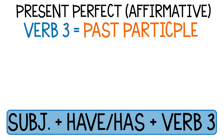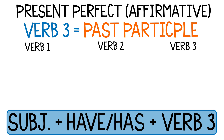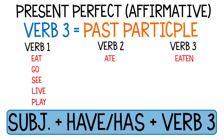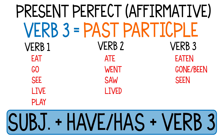Let's look at some verbs and go through verb one, two, and three. We'll use the verbs eat, go, see, live, and play. Eat becomes ate and then eaten. Go changes to went and then gone or been. See becomes saw for verb two and seen for verb three. Live changes to lived and remains the same for verb three. The same is true for play, where verb two and verb three are the same — played.